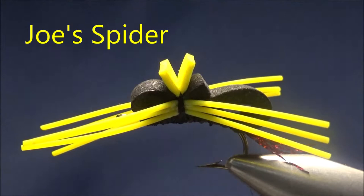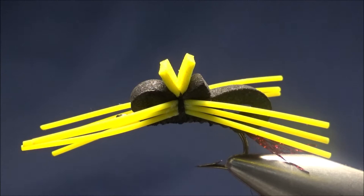Today I'd like to tie a bluegill pattern. This is known as Joe's spider, tied by a good friend of mine, Joseph Amanetti. It's sort of his signature fly. Joe's been tying this pattern for a long time and catching an awful lot of bluegill and bass on it.